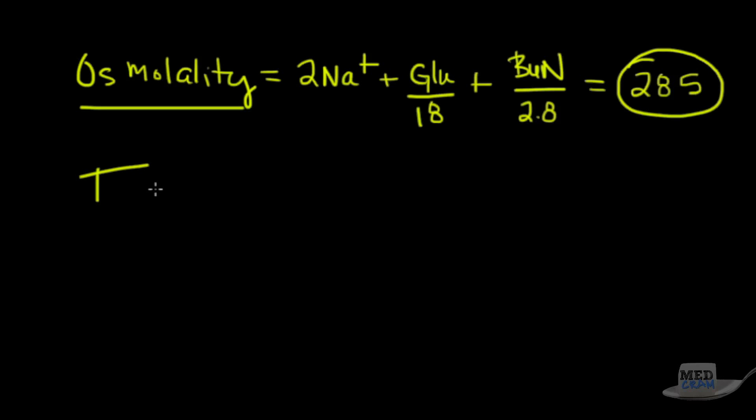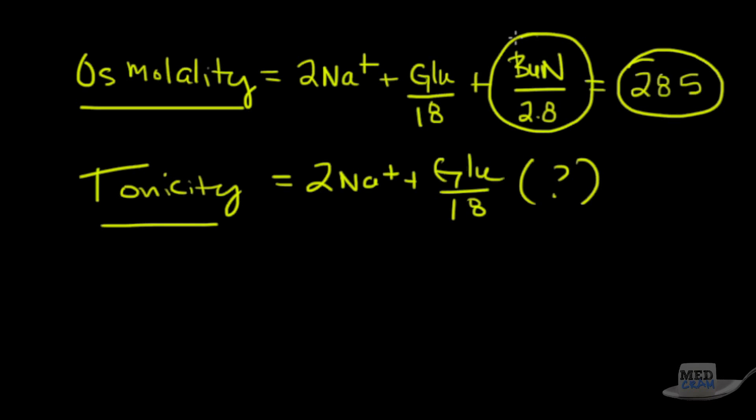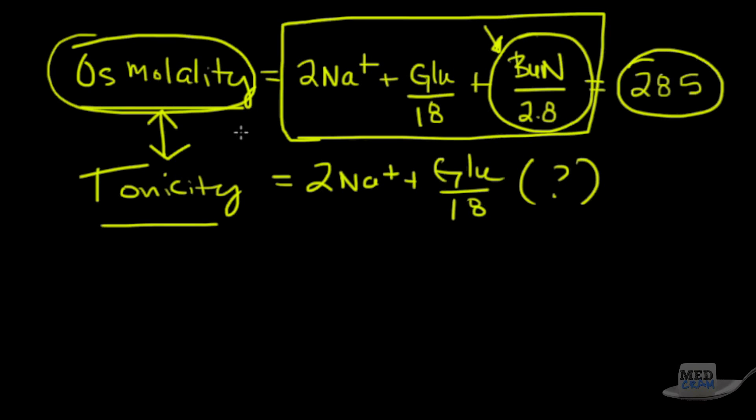Something very similar to osmolality is tonicity. It's a very similar concept. It's two times the sodium concentration plus the glucose divided by 18 once again. Why is it missing the BUN component? It's missing the BUN component because BUN can go freely between the plasma membranes. Therefore, BUN doesn't have much of an effect on the difference between the inside of the cell and the outside of the cell. From now on, we'll use tonicity and osmolality interchangeably. But be aware that if they ask you to calculate the osmolality, this is the equation you should use.